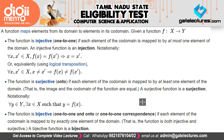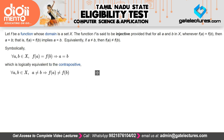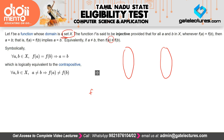Injective functions are also called one-to-one functions. This definition is taken from Wikipedia. It states: let f be a function whose domain is set X. The function f is said to be injective provided that for all a and b in X, if f(a) equals f(b), then a must equal b — that is, f(a) = f(b) implies a = b.